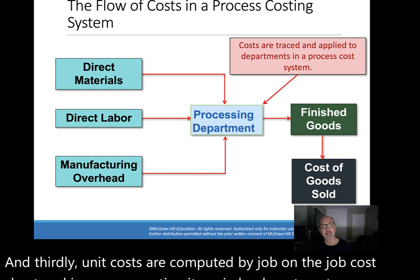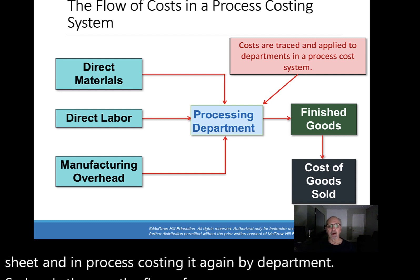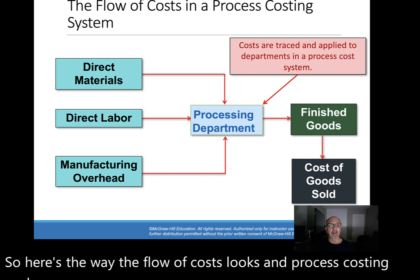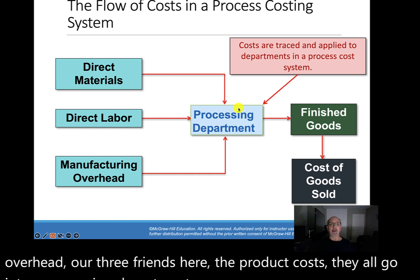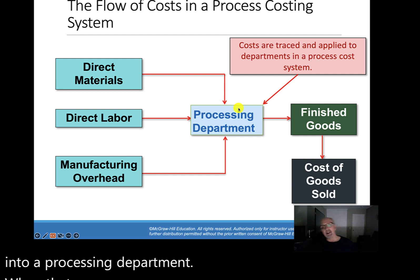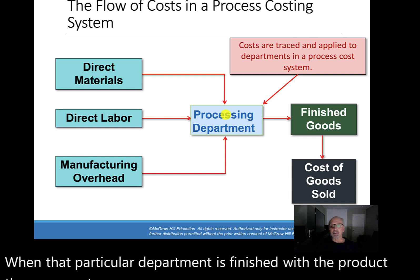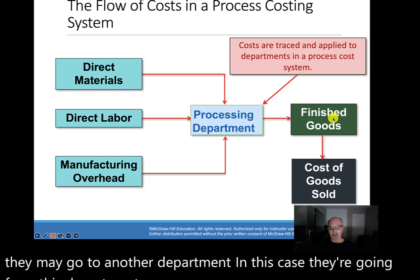Here's the way the flow of costs looks in process costing. We have direct materials, direct labor, and manufacturing overhead — our three product costs. They all go into a processing department. When that particular department is finished with the product, they may go to another department. In this case, they're going from this department into finished goods and then from finished goods to COGS.